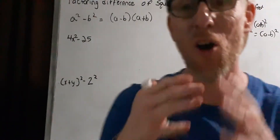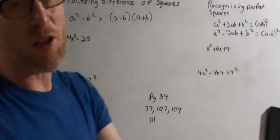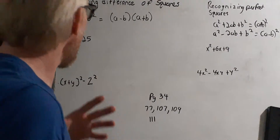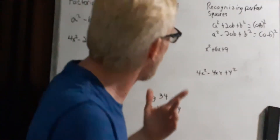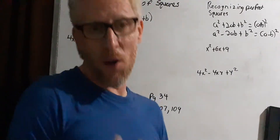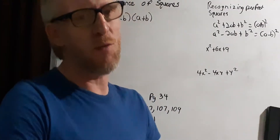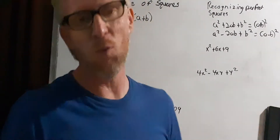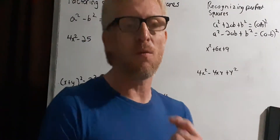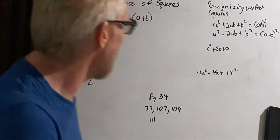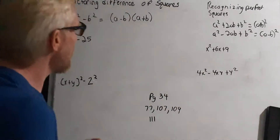We're going back to what I was originally planning: continuing our lesson on polynomials — factoring polynomials to be exact. Today we're going to talk about factoring differences of squares and recognizing perfect squares. We already went through the formulas in the last video, the special products of binomial formulas, differences of squares, perfect square trinomials. Today we're going to work with the factoring of them.